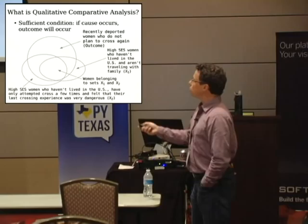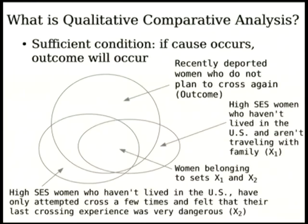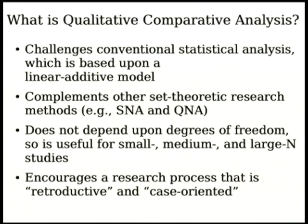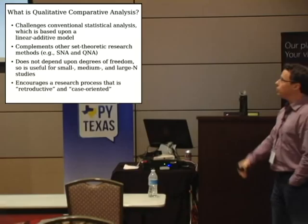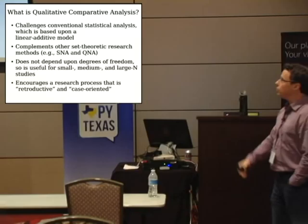Another group was high SES women who haven't lived in the US, who had only attempted crossing a few times and felt their last crossing experience was very dangerous — they were assaulted, raped, something happened. These women again said they're going home. There's an overlap here: the high SES women who haven't lived in the US appear in both of these groups, so some women were sort of over-determined in their decision to go home.